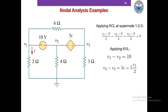Here is another problem — please write the KCL and match your answer. We have two consecutive super nodes: V1-V2 and V2-V3. We consider them as one super node (V1, V2, V3) and write one equation. Then we take two KVLs across the two voltage sources to obtain two more equations, giving us three equations total to solve the problem.